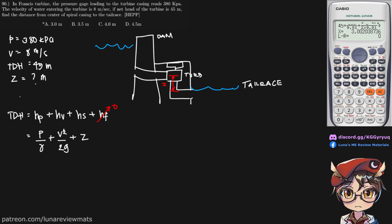So we are given our total dynamic head, we have a pressure, we have the velocity, trying to find Z. Gamma is simply 9.81, and G is also simply 9.81, acceleration due to gravity.